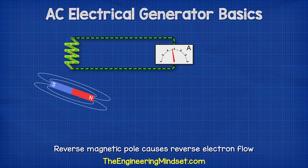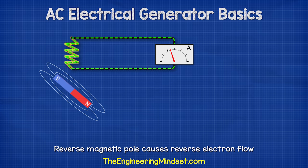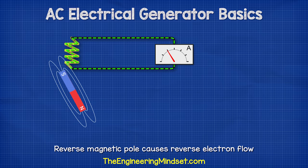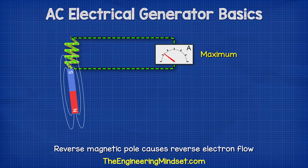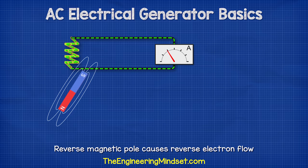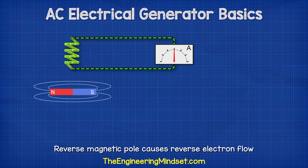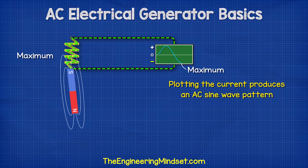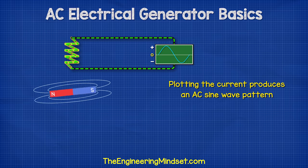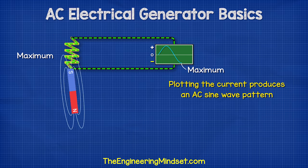Now the opposite end of the magnet begins to get closer to the coil, and this pulls electrons in the opposite direction. This again reaches a maximum point and then decreases back to zero. If we were to plot this current on a chart, we would get a sine wave with current flowing in the positive and then the negative regions.